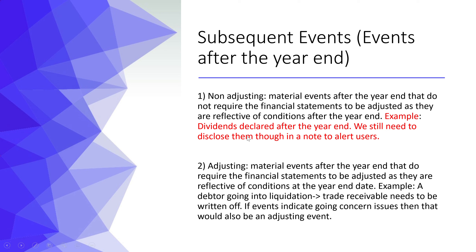I want to highlight subsequent events in relation to audit and assurance because it's a key area — you have to continue to audit until the day that you sign the financial statements, so you're always checking. A real-life example I've come across is overstatement of receivables. Looking for post-year-end data and correspondence helped me identify that those receivables were overstated — that's where auditors can add value.